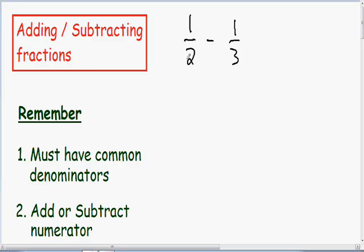Now I want to go over one more adding and subtracting fractions example with fractions that do not have common denominators. Here we have 1 half minus 1 third. In the first fraction we have a denominator of 2, and in the second fraction we have a denominator of 3. In order to subtract these fractions, we need to have a common denominator — the bottom numbers need to be the same.